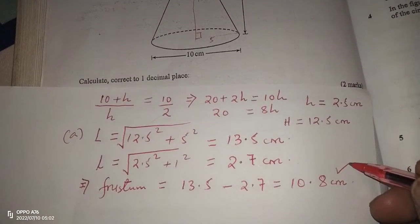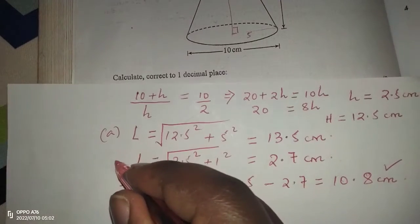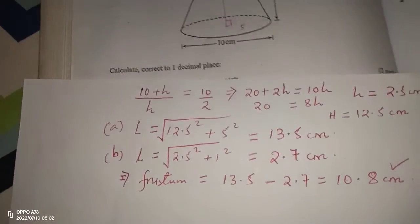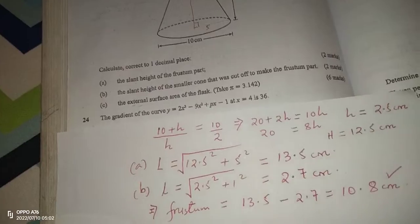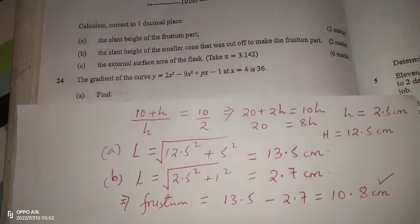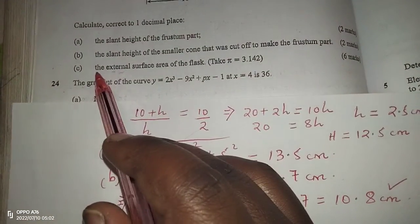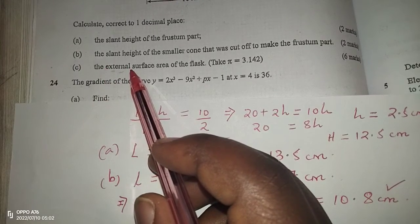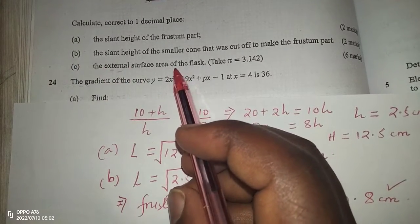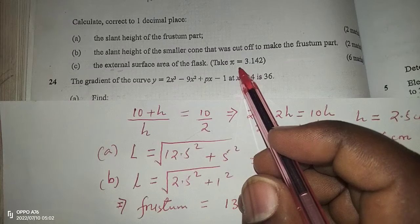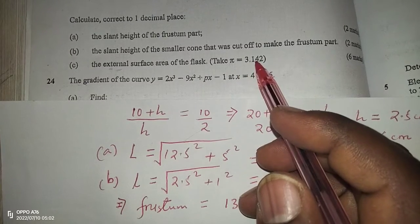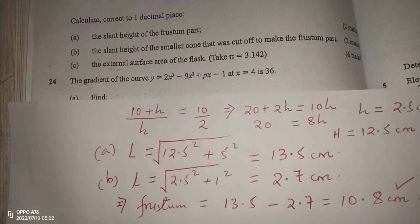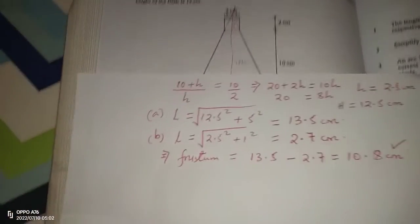Part B is the slant height of the smaller cone (2.7 cm). Now after obtaining the slant heights we can proceed to solve part C — the external surface area of the flask. The value of π we will use is 3.142.